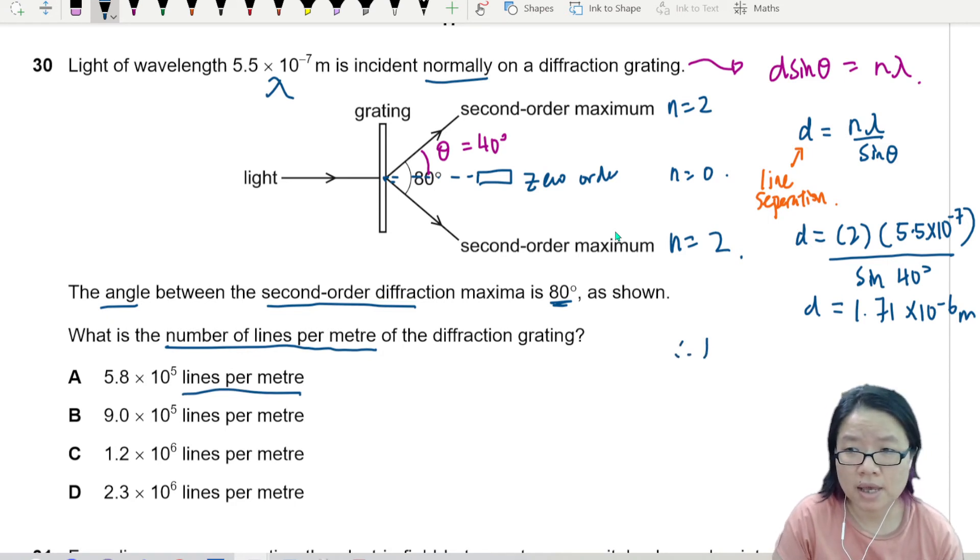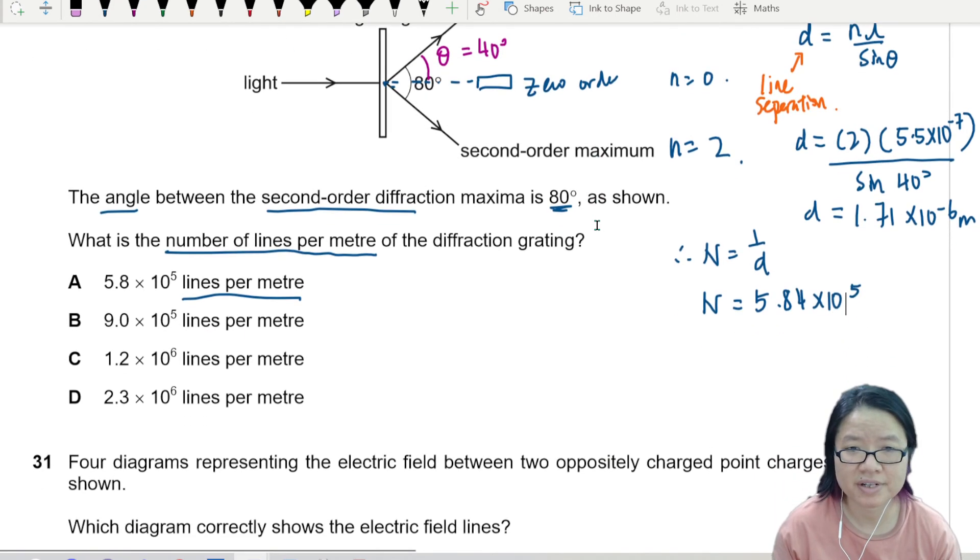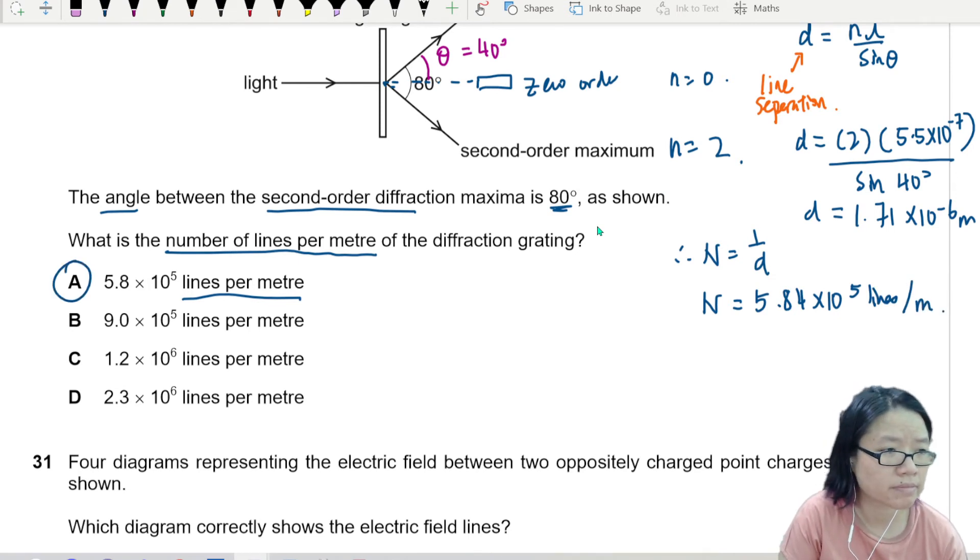So hence, N is 1 over d. So if I take 1 over this value, I will get 5.84 × 10^5 lines per meter. Okay?